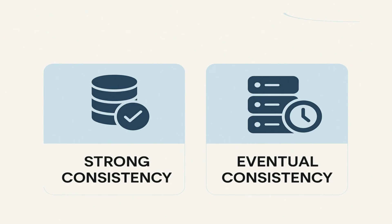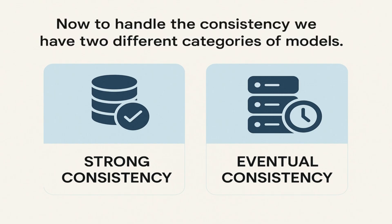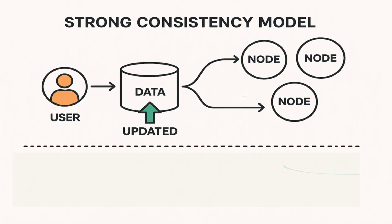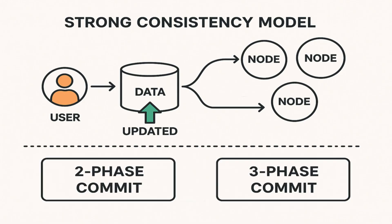To handle consistency, we have two different categories of models: one that supports strong consistency and the other that supports eventual consistency. In case of a strong consistent system, the moment data is updated by one user, the same data is available in all the nodes, so that any read that happens after that update will return the updated value. Two-phase commit and three-phase commit are the strategies that fall under the strong consistency model, which we have already discussed.